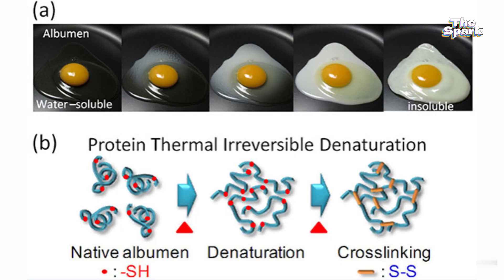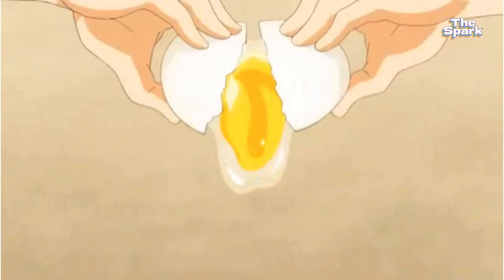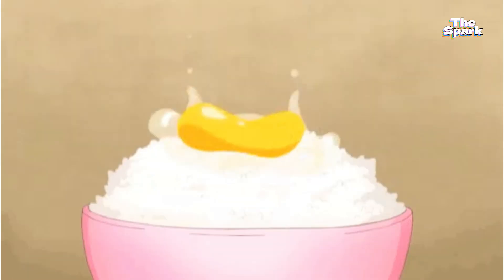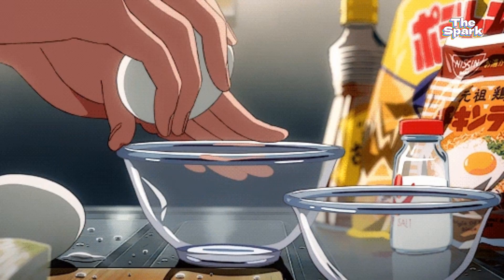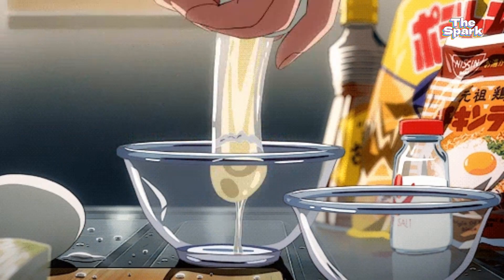The heat changes the structure of the proteins, and this change is permanent. You can't turn the cooked egg white back into its raw, runny form.